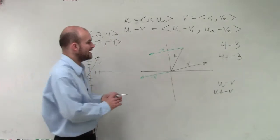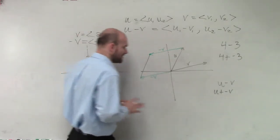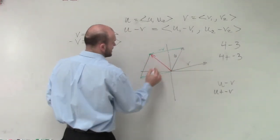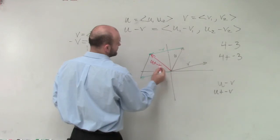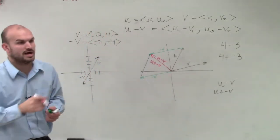Then, once you have this, you notice is then you have a parallelogram where now you can find your resultant vector, which right here, which is going to be u plus negative v or u minus v in reality.